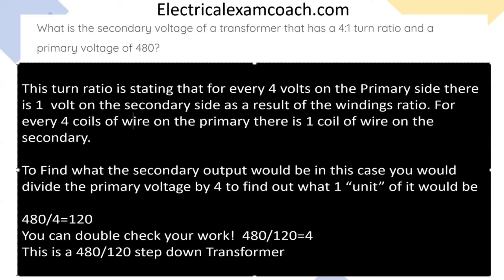To find out the secondary output you would divide the primary voltage by four to find out what one unit of it is. We would take 480 divided by four and that equals 120.